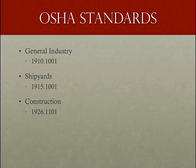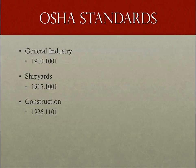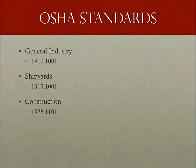If you'd like to learn more about these standards, just go to your favorite search engine and type in 1910.1001 for general industry as one example. For general industry, 29 CFR 1910.1001 covers work such as exposure during brake and clutch repair, maintenance work, and manufacture of asbestos-containing products. For shipyards, 29 CFR 1915.1001 covers construction, alteration, repair, maintenance, renovation, and demolition of structures containing asbestos during work in shipyards.